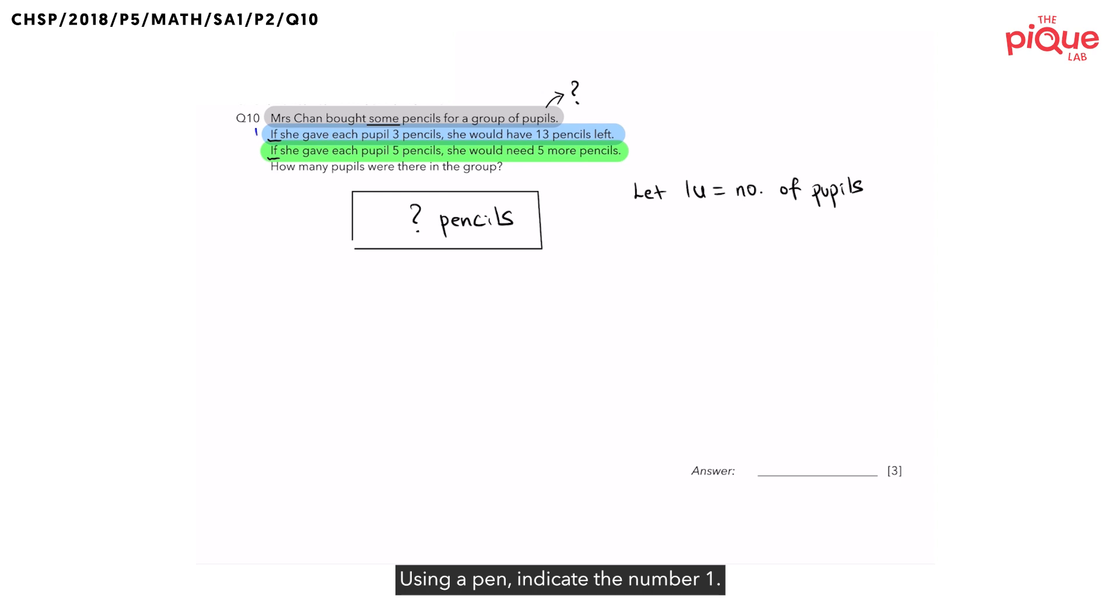Using a pen, indicate a number of one. We shall refer to this sentence as case one. In case one, we noted a keyword that is left. What does left mean? Does it mean that Mrs. Chan has too many pencils or too few pencils? Left means that she bought too many pencils, or in other words, she has excess.